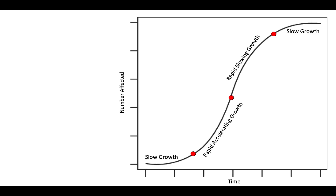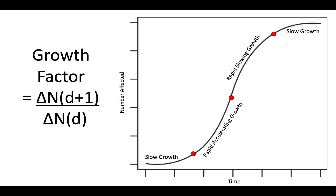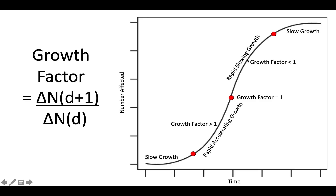This is our curve. What we look at on this curve is something called the growth factor — basically your rate of return, like interest. When you have a growth factor greater than one, your viral transmission is growing very quickly. When the growth factor equals one, it's at the inflection point, and at that point the total number of people affected will roughly double. As you slow down, the growth factor becomes less than one.